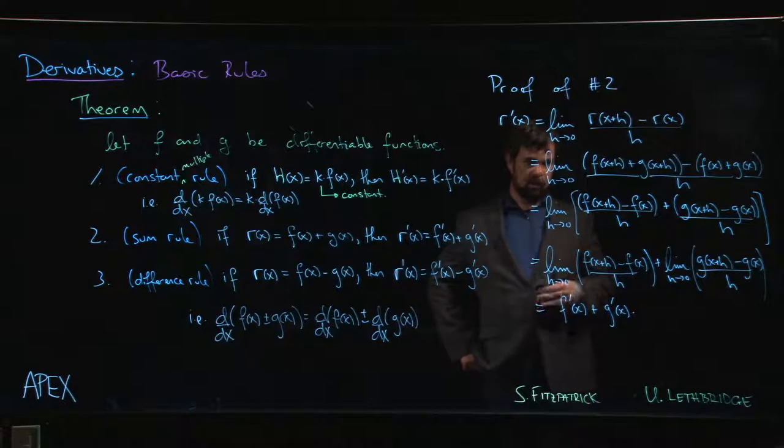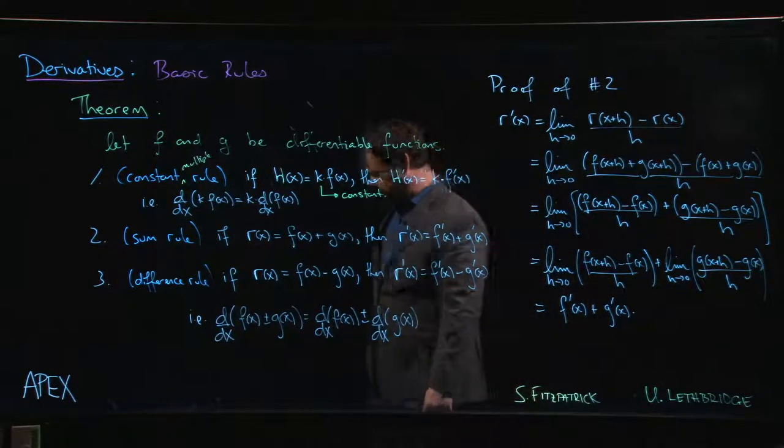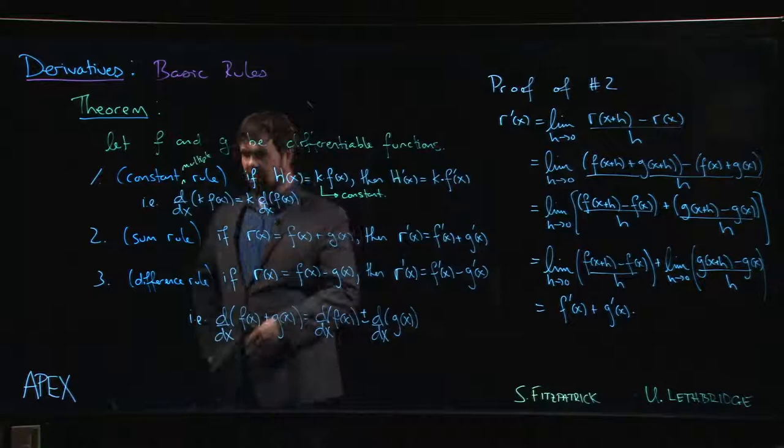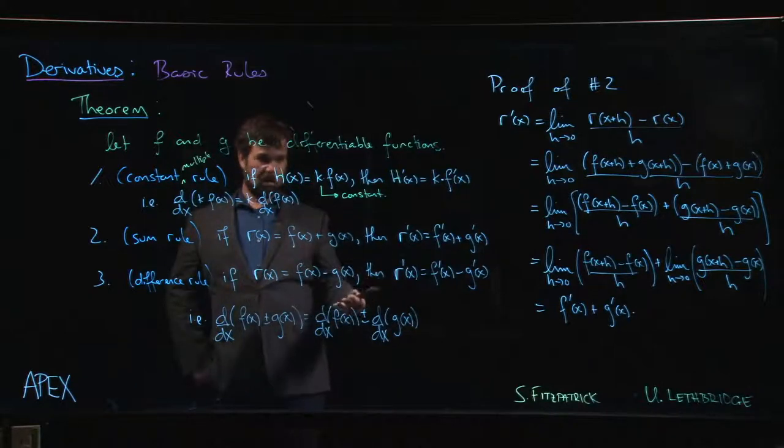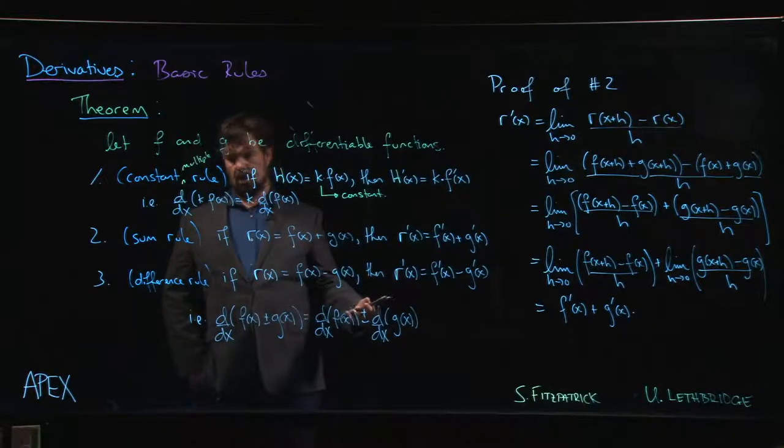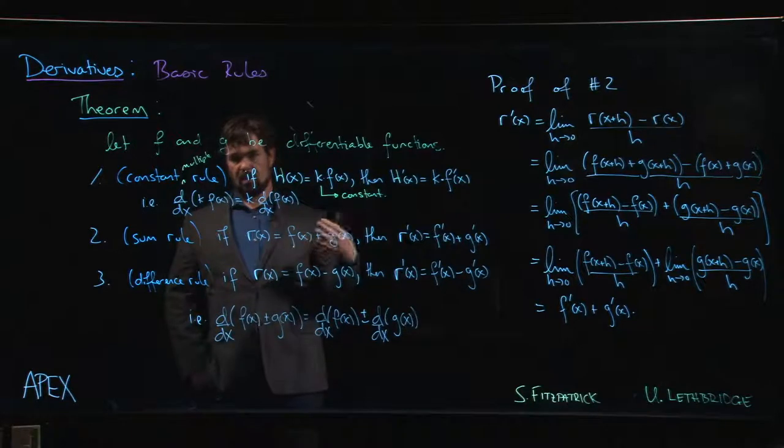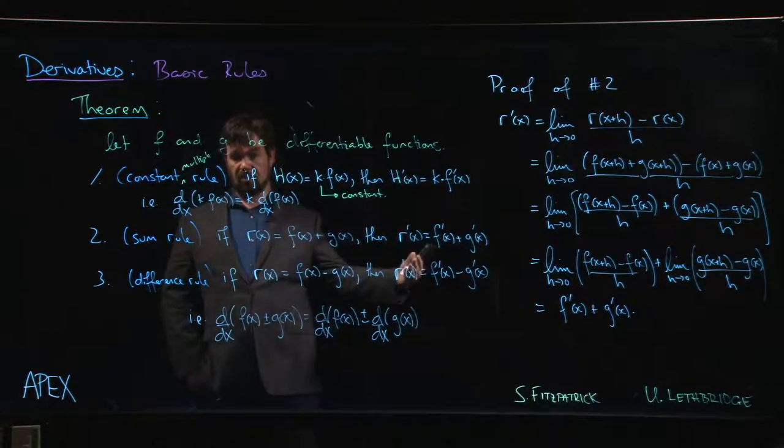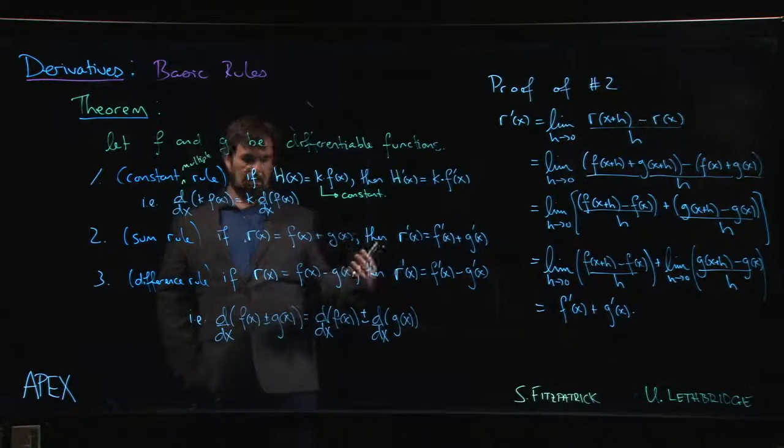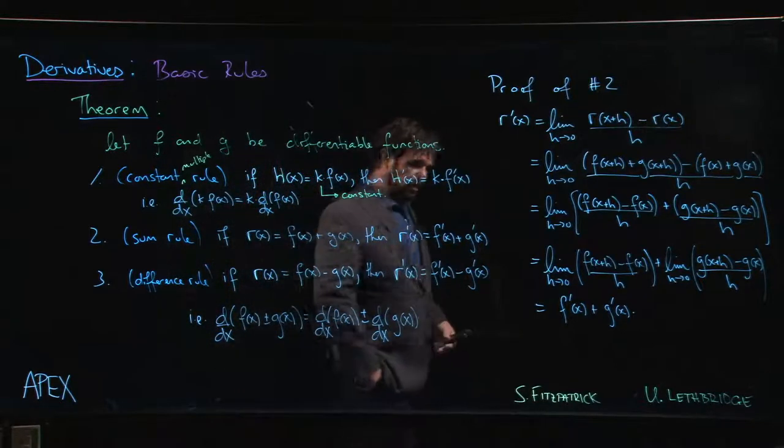We'll see in the next few examples how to actually put that into practice. And just by way of warning, you might think that this pattern is going to continue. We know that limit of a product is product of limits, same thing for quotients and so on. But we're going to find that once we get into products, quotients, compositions, the derivative rules start getting more complicated.